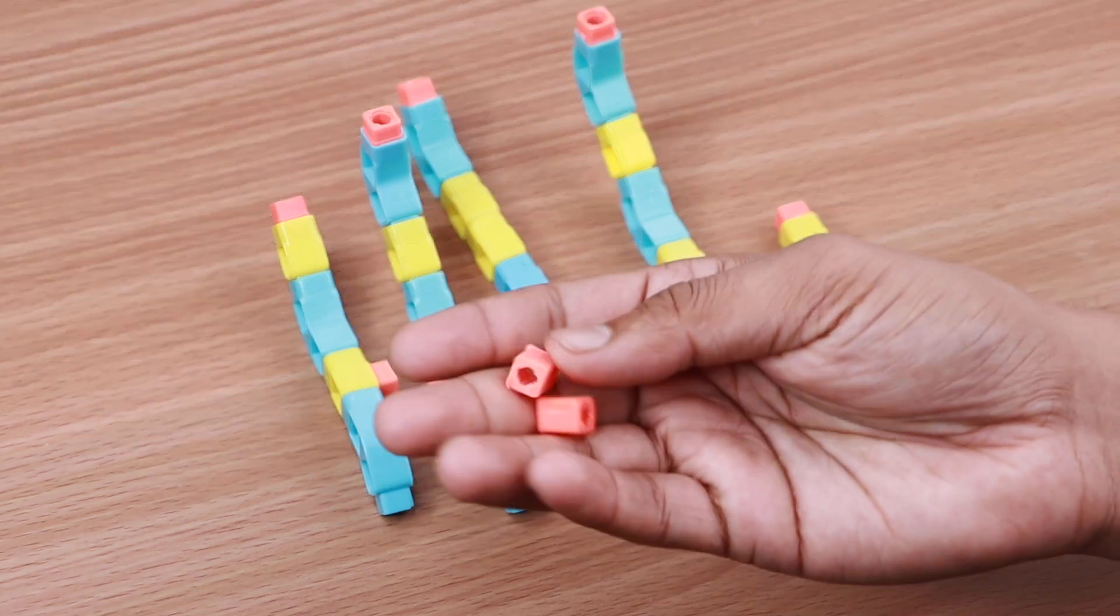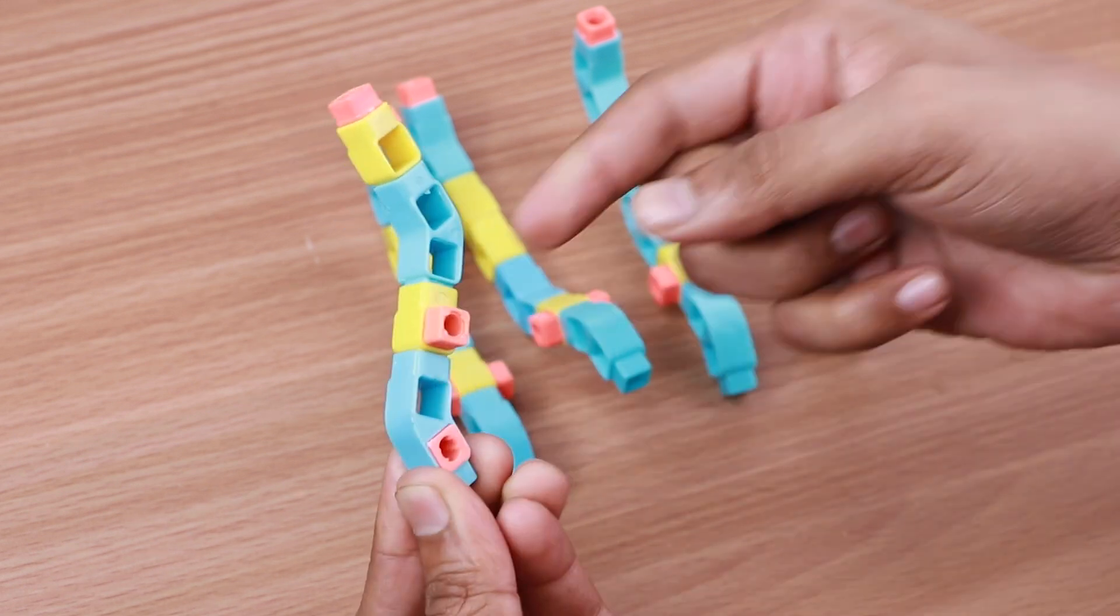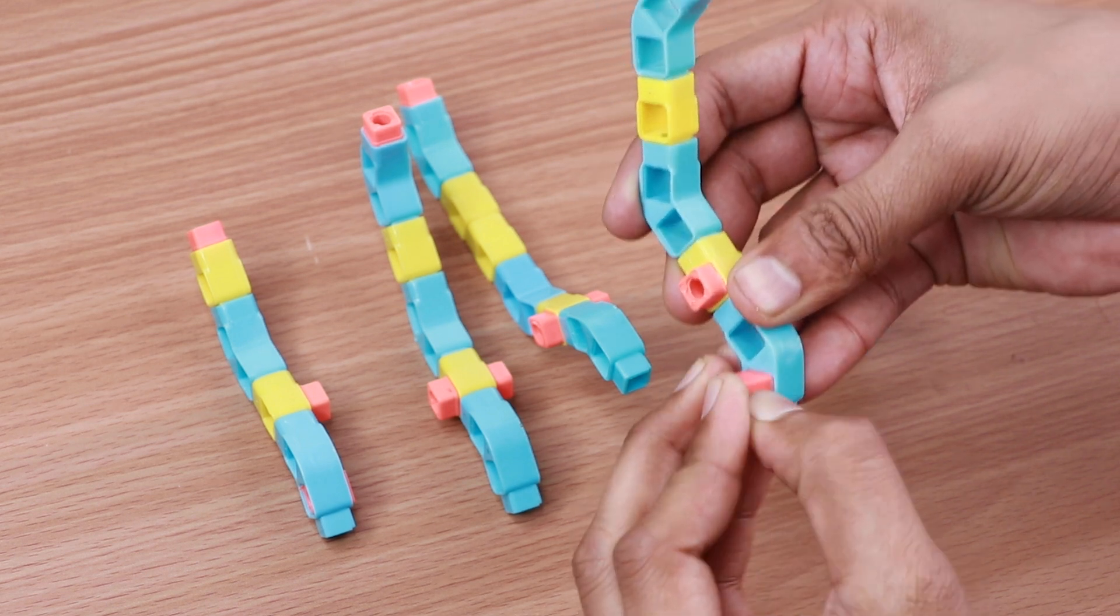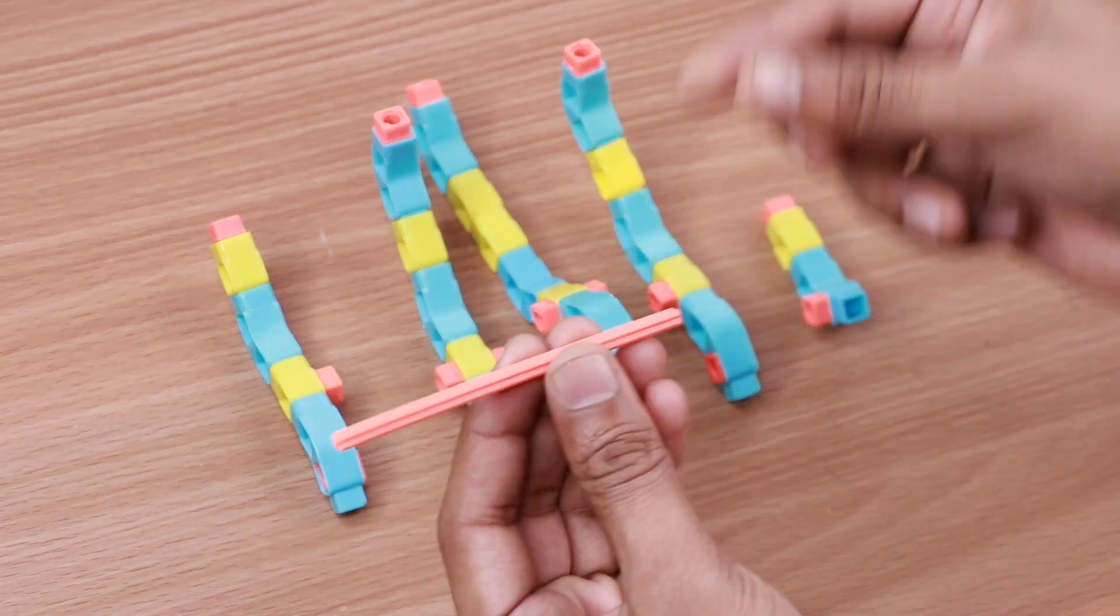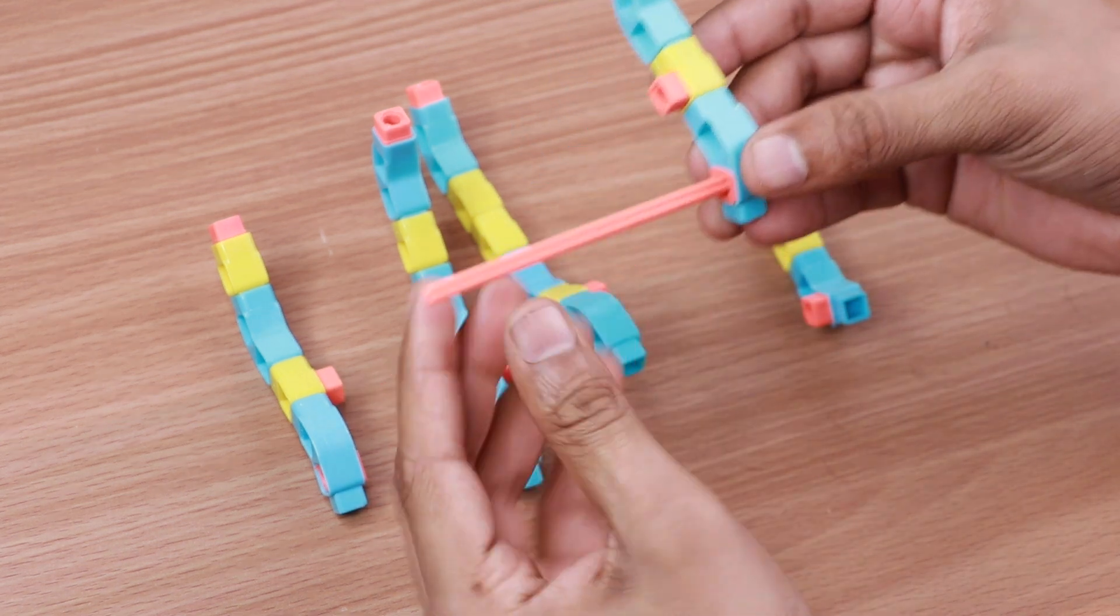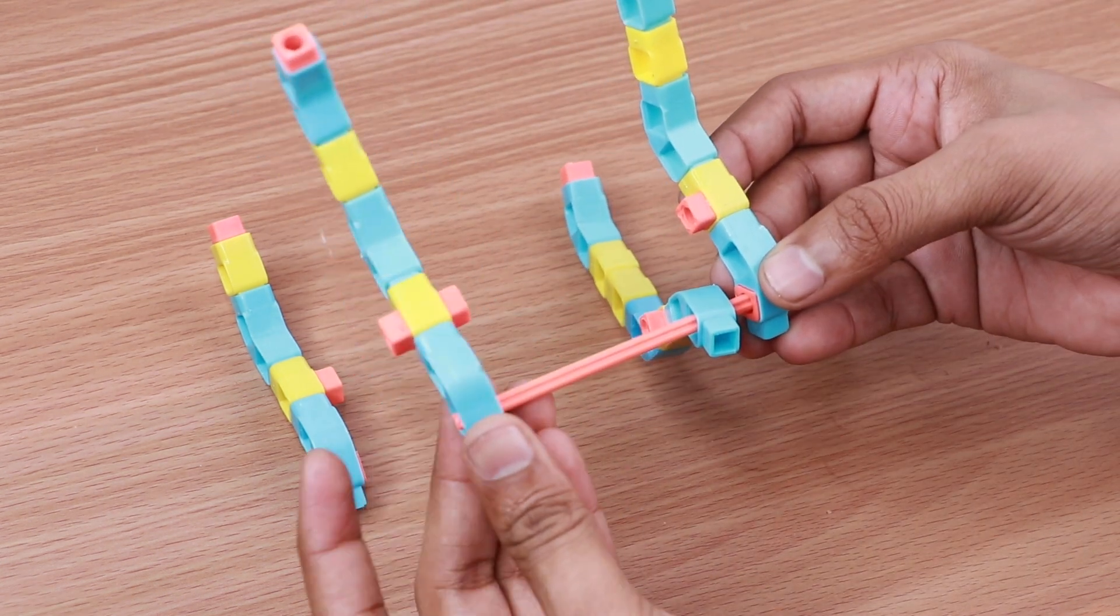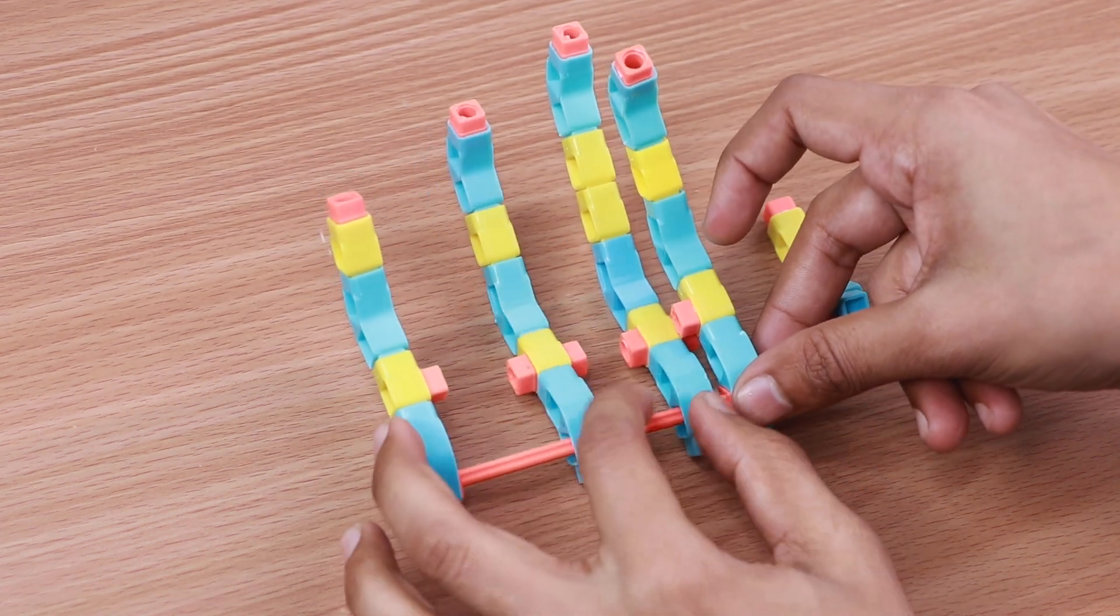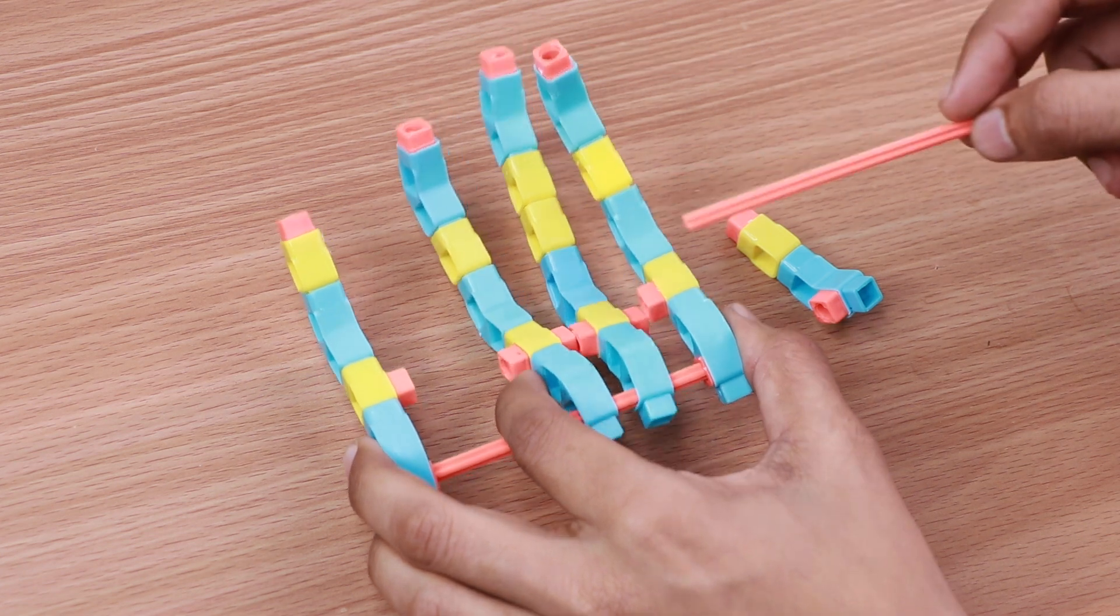Also, attach 2 BO shafts to the 1st and 4th finger. Take a 90mm long axle and secure it to the BO shaft on the 4th finger. Now connect it to the 1st finger's BO shaft while passing it through the 2nd and 3rd fingers. Take 1 more 90mm long axle and pass it through all the fingers via their MM couplers.